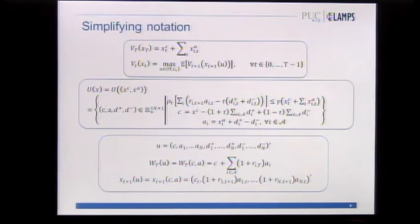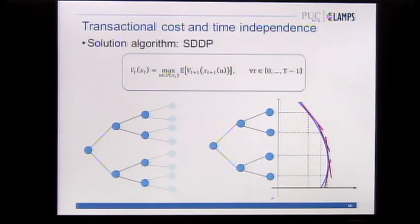If we look here, it looks like a risk-neutral problem, but it's not because we have a risk constraint, and then this is time consistent. How do we solve this problem with transaction costs? Stochastic dual dynamic programming does the trick. It does the trick because we're also assuming time independence. Why is this important? Because our value function here is the same independent of which node we are in the tree because of time independence. This is good—we can share cuts. That's the trick of SDDP.